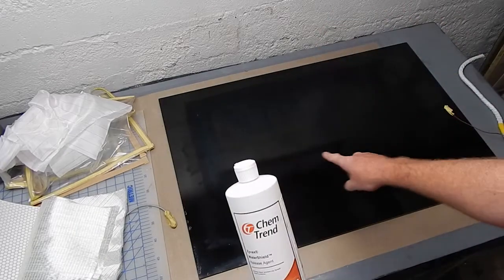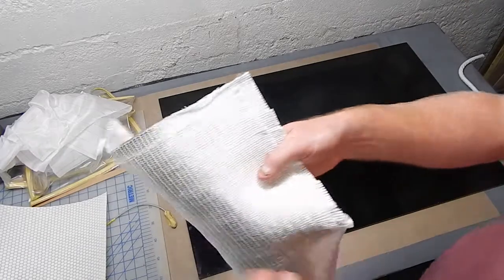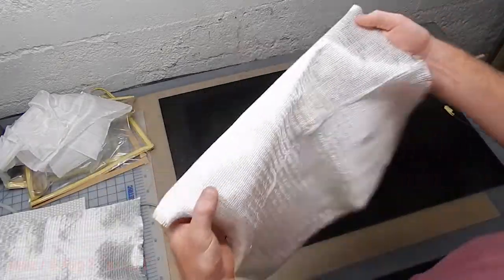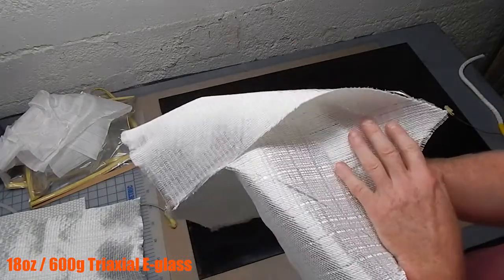I'm laying this up on a G10 sheet with some chemical release. The surface is not beautiful but it should be okay. I just want to be able to show some shrinkage in the resin so there's going to be no gel coat.